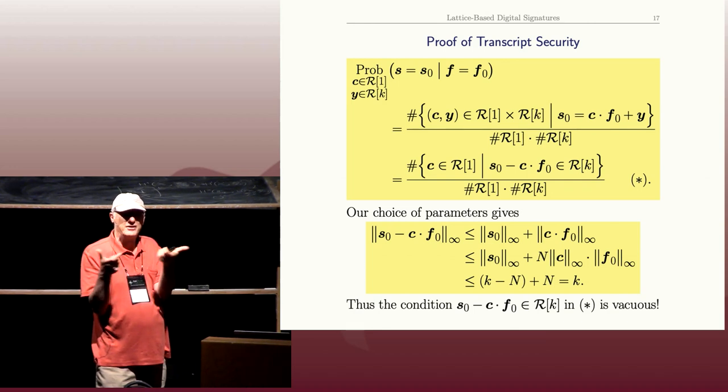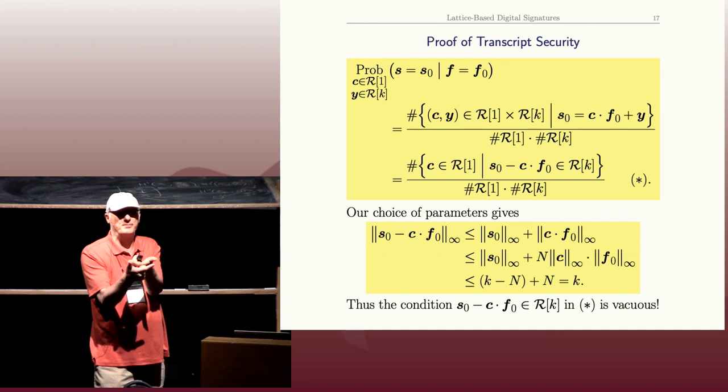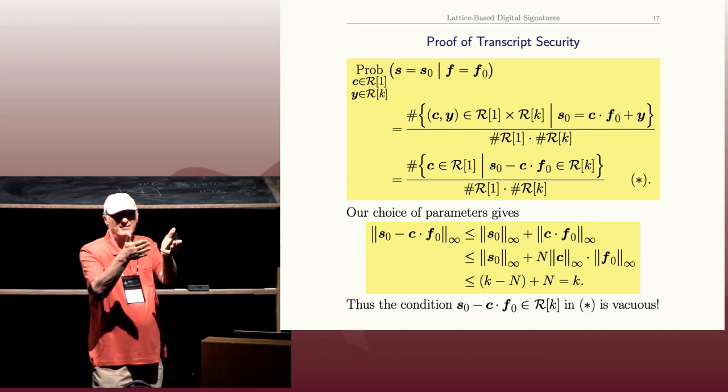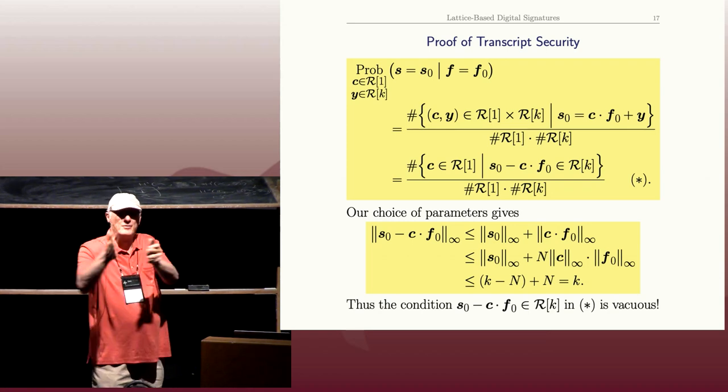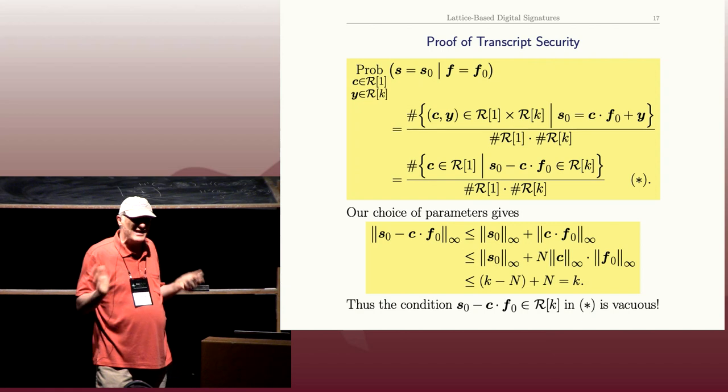and you take the dot product, the absolute biggest it can be would be N. Because you're adding up at most N ones. I mean, it's likely to be much less. This is kind of a random walk. You'd expect it to be more like square root of N.